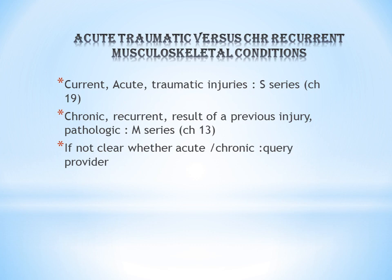Next is acute traumatic versus chronic recurrent musculoskeletal conditions. These musculoskeletal conditions are of two types: acute traumatic condition and chronic recurrent condition. I will explain this with fracture as an example. Fracture is of two types: traumatic fracture and pathologic fracture.